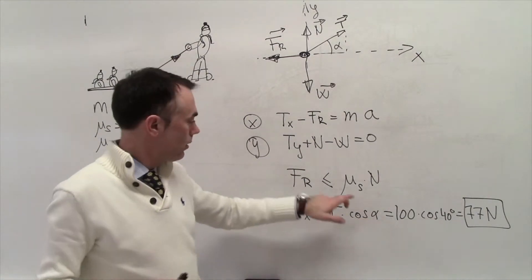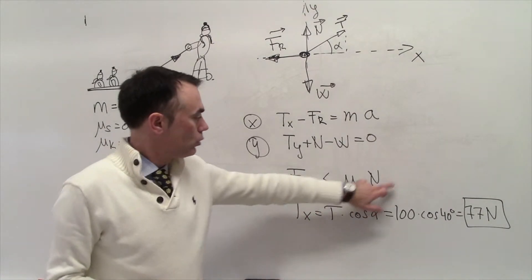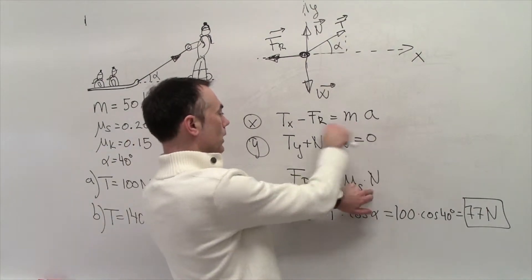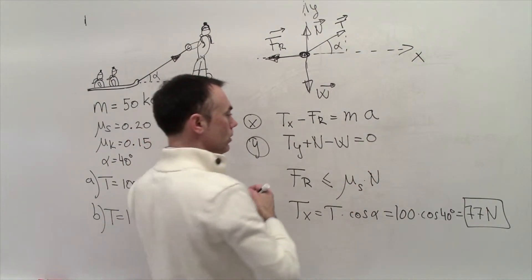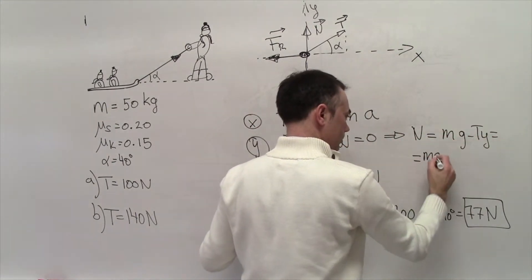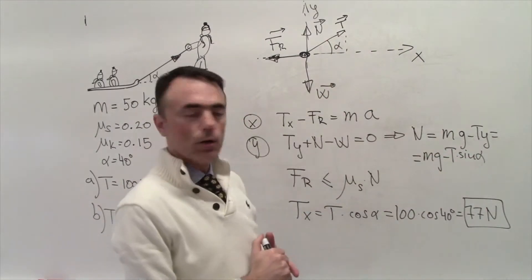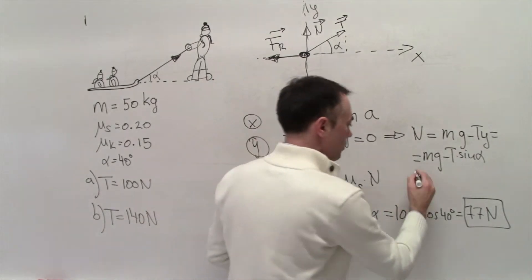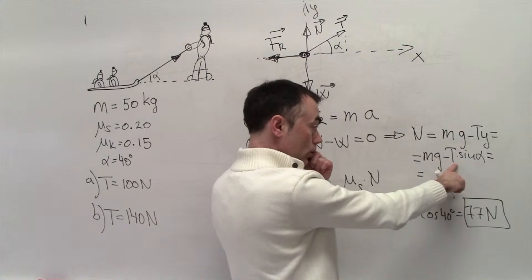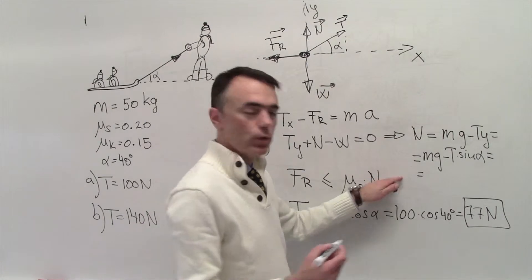Now we need to compare this to the limit force, which is mu-static times N. To calculate the normal force, we solve the y-axis equation: N equals mg minus T sine alpha, which is 50 times 9.8 minus 100 times sine of 40 degrees. The result is 85 newtons. The maximum static friction is therefore mu-static times 85 newtons.